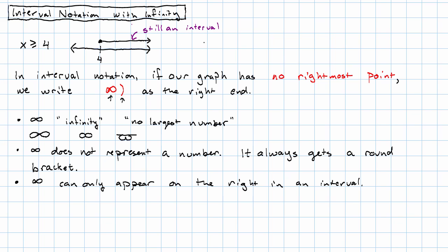So, in our example up here, 4 gets a round bracket because it has a filled-in dot, because it's included. And then, there's no rightmost end, so we write infinity on the right. Infinity always gets a round bracket. That's what we do if there's no rightmost point.